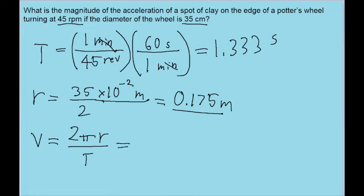So if you put that in your calculator, using 0.175 meters for r, and 1.333 seconds for T, then we find a speed of the motion of about 0.8249 meters per second.